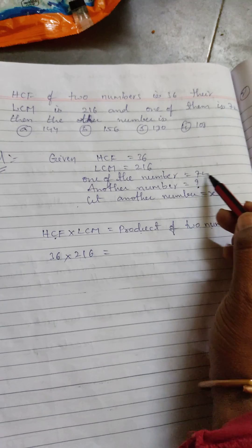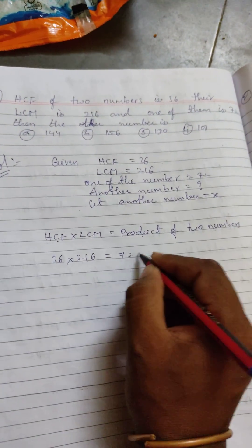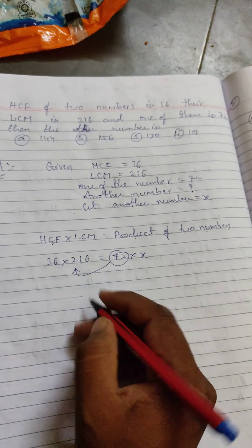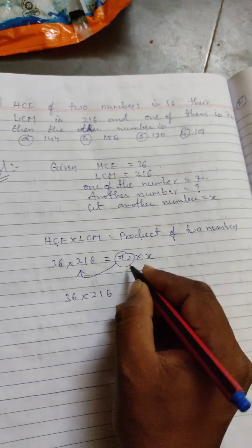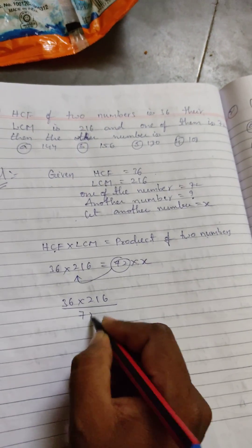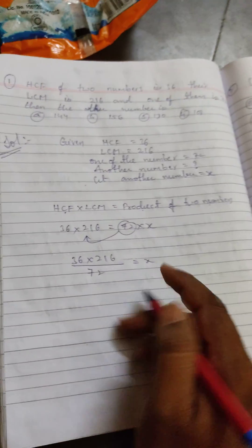72 into x. 72 will transpose RHS to LHS. Yes, 72 is in multiplication. If you transpose RHS to LHS, it should be division. Okay, now better to do cancellation.